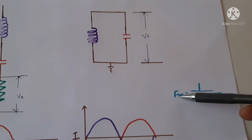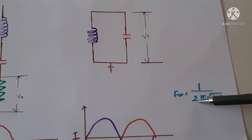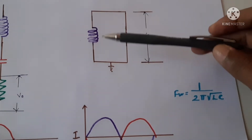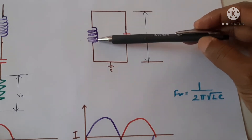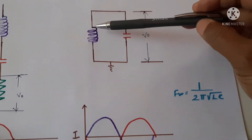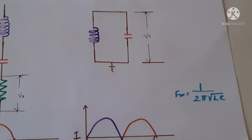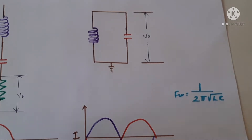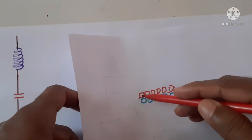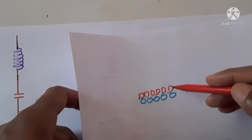The equation for resonant frequency is given by: frequency equals 1 divided by 2π√(LC). As L increases, the frequency decreases, and as C increases, the frequency decreases. When inductance is increasing, a current passing through it means most of the energy is taken by the inductor, so the rate of change of current will be very low.